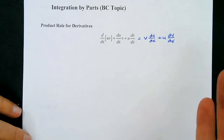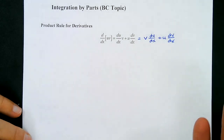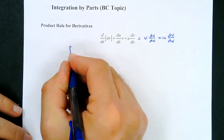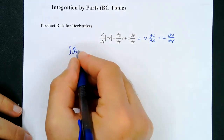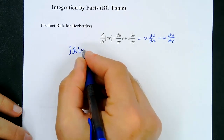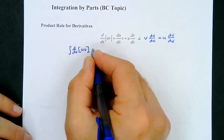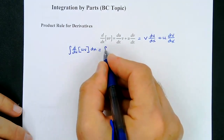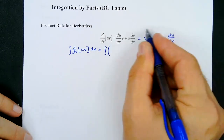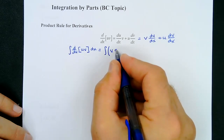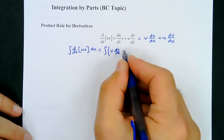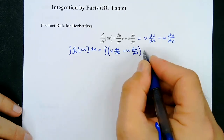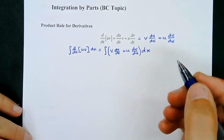Because this is an integration technique, we want to get an integral out of this, so we're going to integrate both sides of this equation. That becomes the integral of d/dx of u times v with respect to dx, and then this side becomes the integral of v times du/dx plus u times dv/dx, integrating both sides with respect to x.